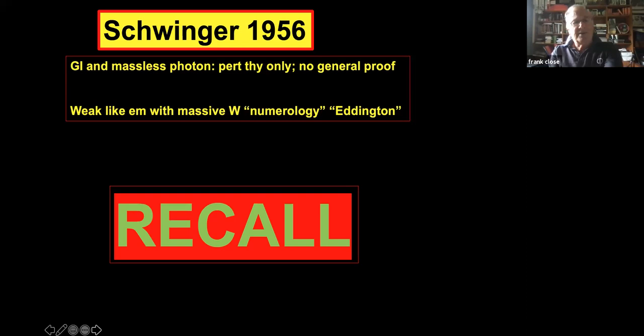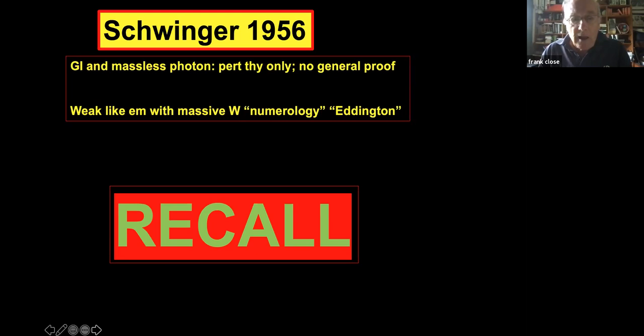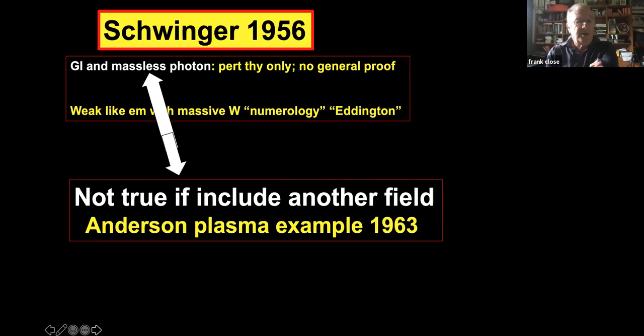Now let's link back to the problem Schwinger was worrying about: gauge invariance and massless photons, which he was only able to prove in perturbation theory but not in general. By around 1960 he was beginning to doubt whether a general proof exists, even beginning to suspect there is no general proof. We now know there isn't — the idea that gauge invariance generates a massless photon is not true if you include other fields.